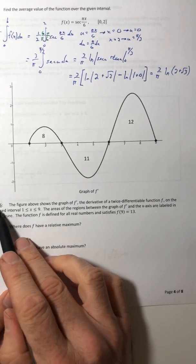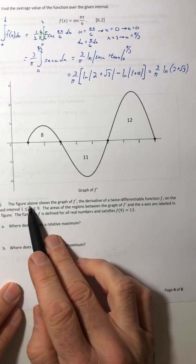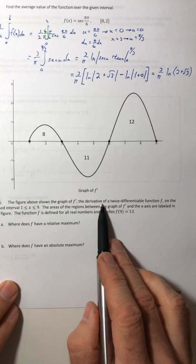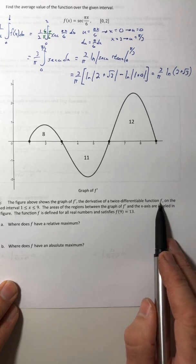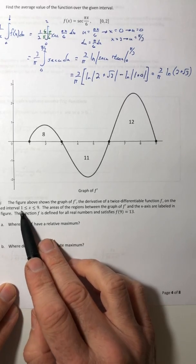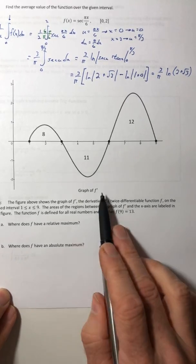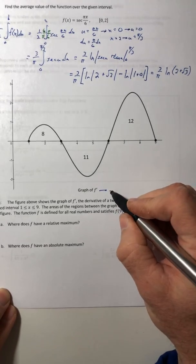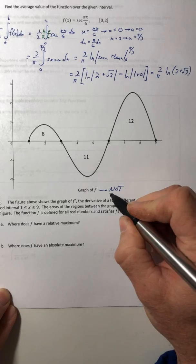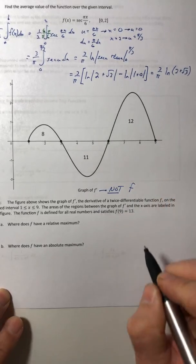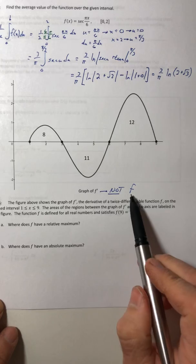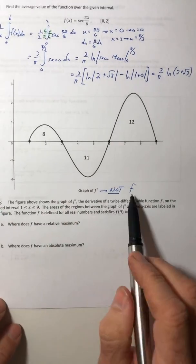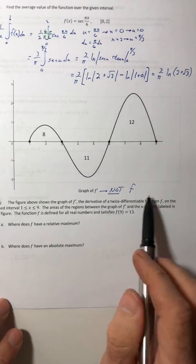Okay, let's look at this last example. The figure above shows the graph of f prime, the derivative of a twice differentiable function f on the closed interval from 1 to 9. This is the graph of the derivative, not f. This is the derivative graph, not the graph of f. I don't know what f looks like. They did not draw that. Don't try to guess.